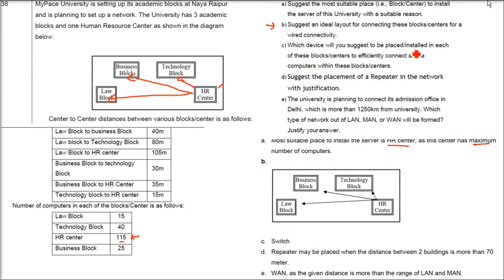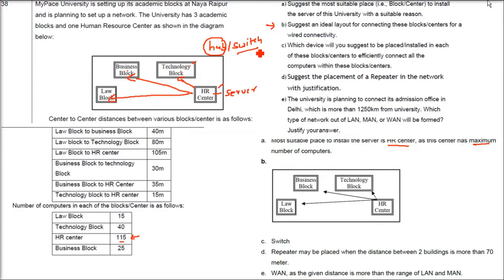The third question asks which device to install in each block to efficiently connect all computers. The answer is a switch, not a hub. A hub is non-intelligent and broadcasts incoming messages to every node, whereas a switch intelligently sends packets only to the destination computer. That is why a switch is preferred.